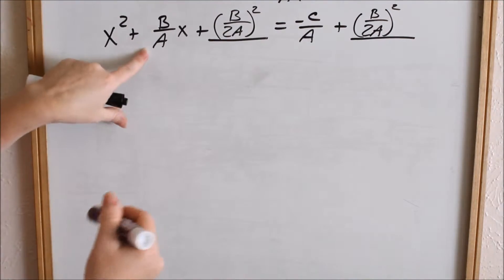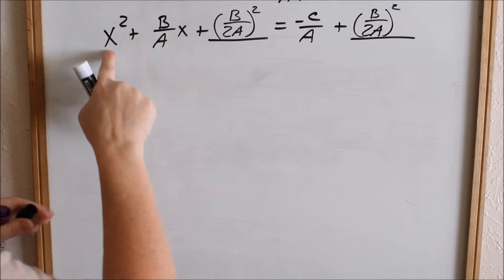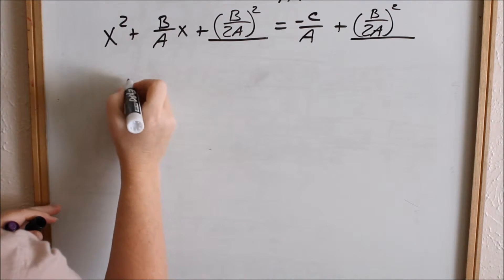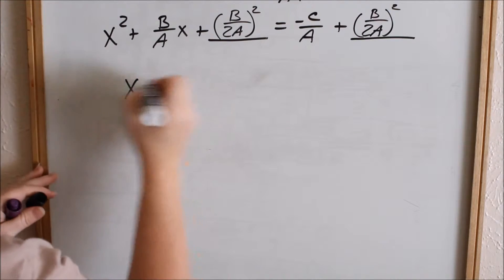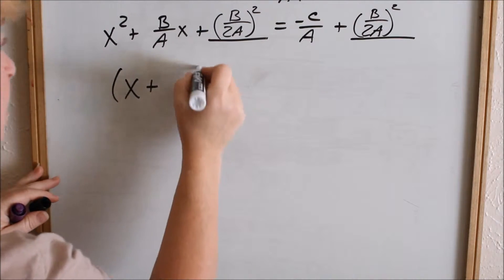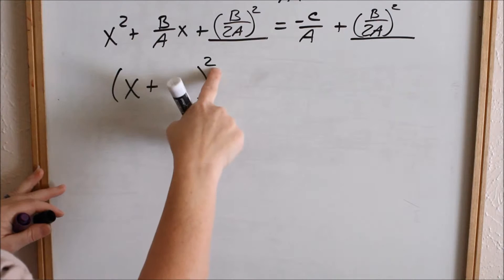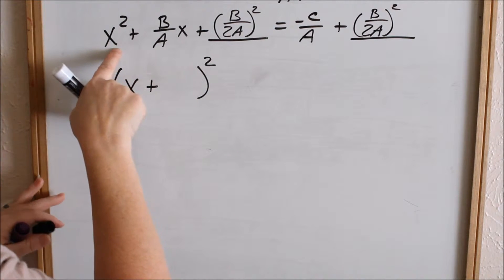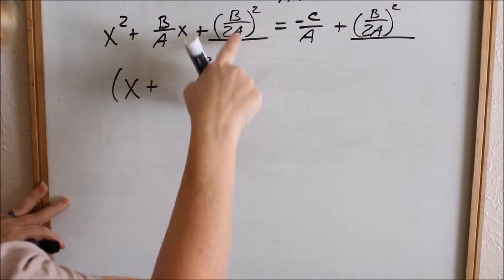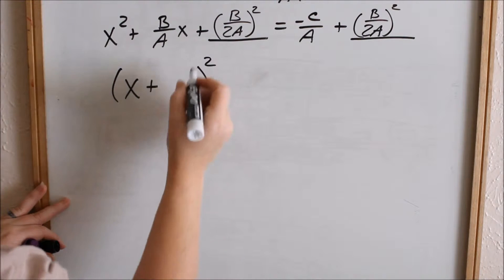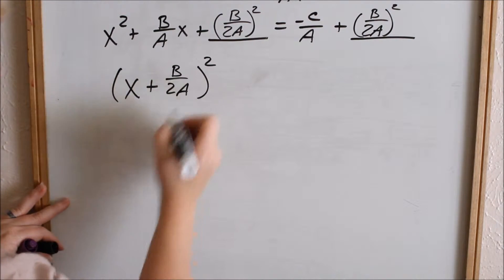On the left side, the next thing we did when we completed the square was factor. We factored this whole thing. If we factored this, it's x plus — and remember, the idea of completing the square is that you're going to have parentheses squared. The square root of that term gives us what is in the parentheses, which is b over 2a.